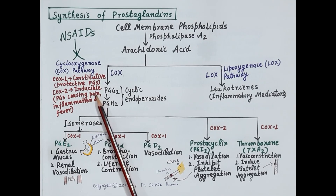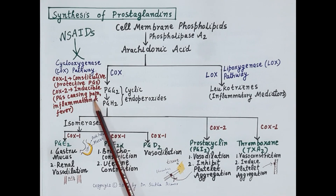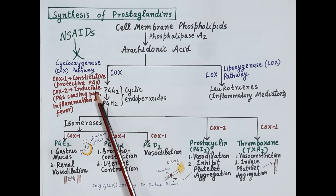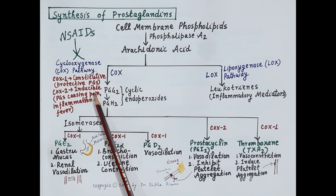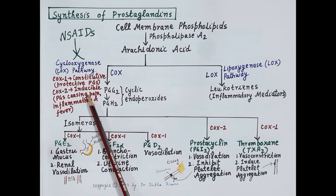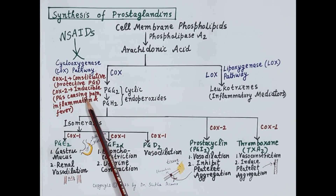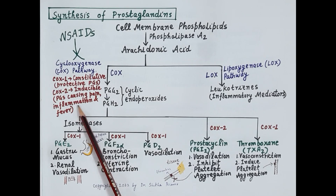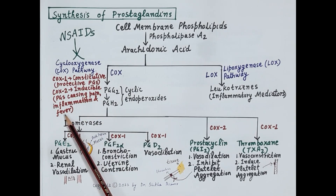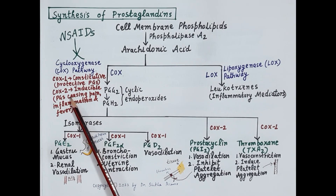COX-2 is an inducible enzyme. As the name suggests, its synthesis is induced by inflammation. It is expressed at the site of tissue injury and inflammation. COX-2 produces large amounts of prostaglandins at the site of inflammation, and these prostaglandins cause an exaggerated or increased inflammatory response, producing pain and fever.